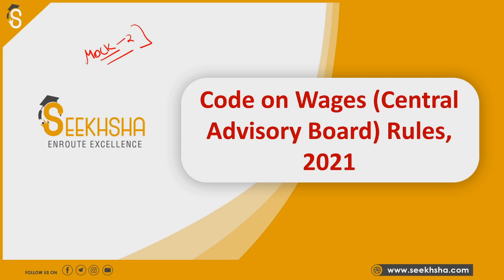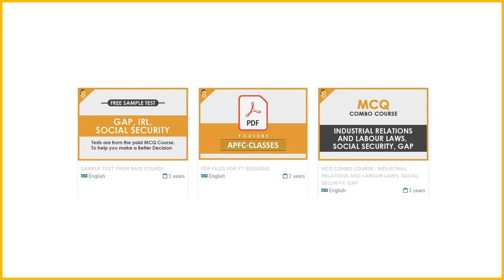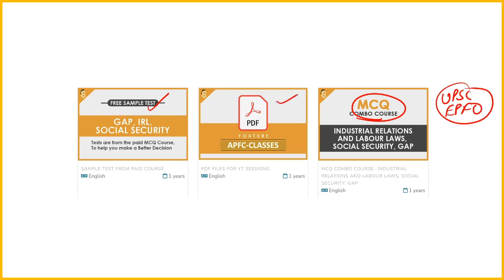Today's topic is the Code on Wages, Central Advisory Board Rules 2021. We will discuss the composition of the Central Advisory Board, the meeting procedures, the term of office, and related small points. The mock test link is in the description. Also check out the MCC combo course and use the MCC code for help.